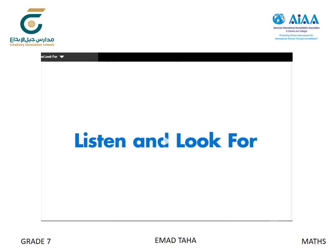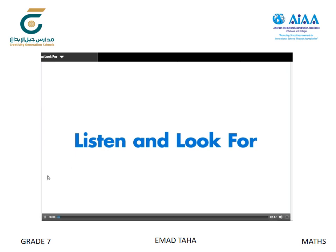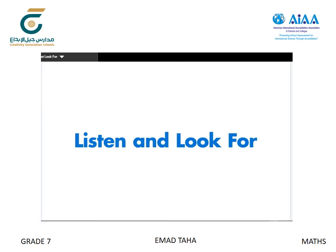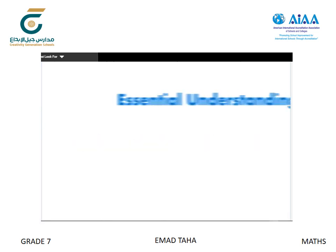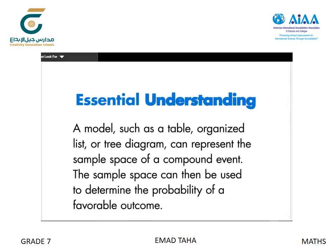Today our lesson is about how to find the probability of a compound event. The essential understanding for this lesson is that a model such as a table, organized list, or tree diagram can represent the sample space of a compound event. The sample space can then be used to determine the probability of a favorable outcome.